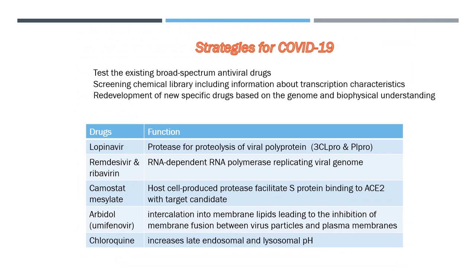Camostat mesylate can be used as a host-cell-produced protease that primes S-protein to facilitate its binding to ACE2, with target candidate transmembrane protease serine-2. Arbidol can be used as a viral surface protein for binding to the host cell receptor ACE2, with target candidate S-protein, and as a viral receptor protein on the host cells which binds to viral S-protein, with target candidate ACE2.